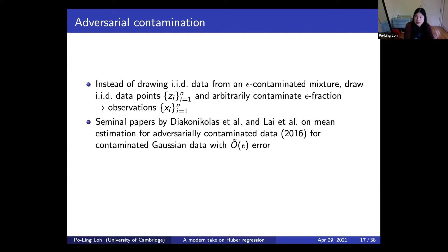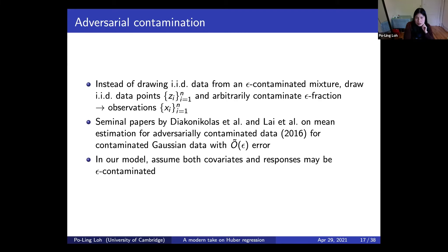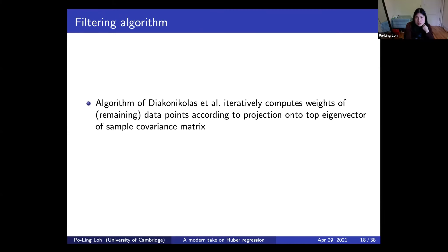The optimal rate for multivariate mean estimation under adversarial contamination is of order epsilon (up to log factors) — the adversary can bias results even with the best estimator. The original paper by Diakonikolas et al. was around 120 pages with two algorithms, since somewhat streamlined. The algorithm iteratively removes points from the contaminated dataset — looking at the sample covariance matrix, truncating points that stick out in the direction of the largest eigenvalue — designed for isotropic data with covariance equal to the identity.